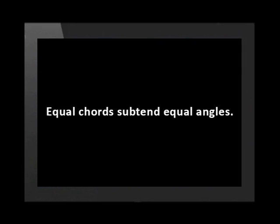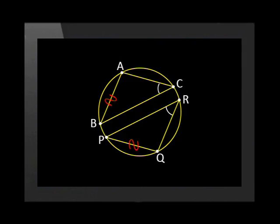This theorem has a result known as the corollary: equal chords subtend equal angles. In the diagram, chord AB subtends angle C and chord PQ subtends angle R. Chord AB is equal in length to chord PQ, which means angle C equals angle R. The converse is also true — equal angles would be subtended by chords of equal length.